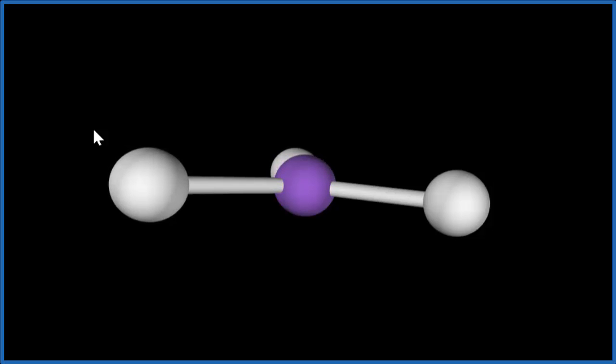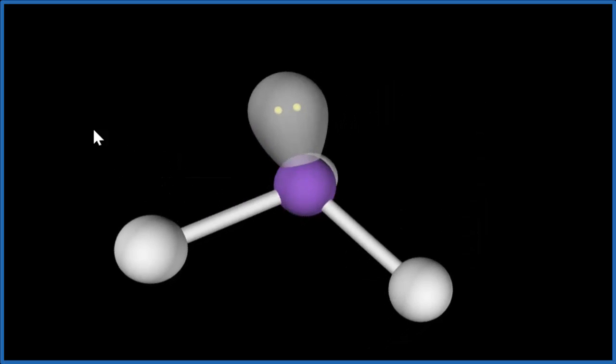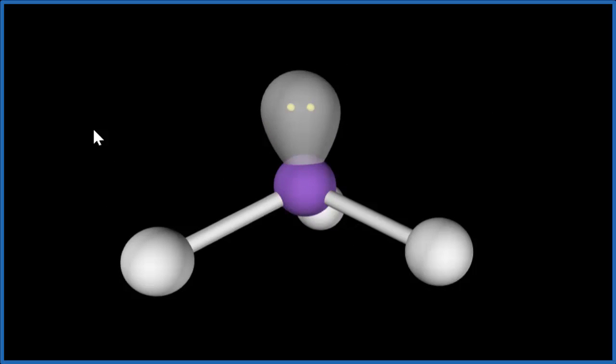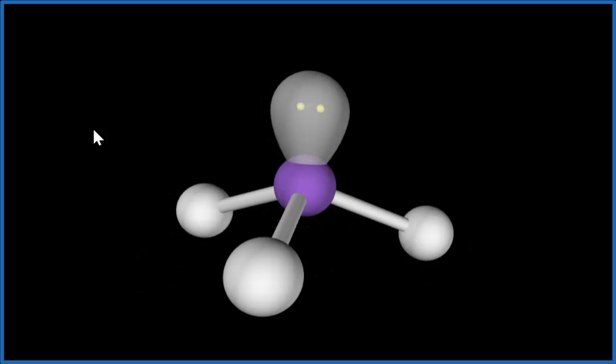We add that lone pair though. Watch how it forces the fluorine atoms down. So it pushes them down. And now we have a tetrahedral electron geometry. We see these four electron domains here. They're all spread out. Electron geometry is tetrahedral.